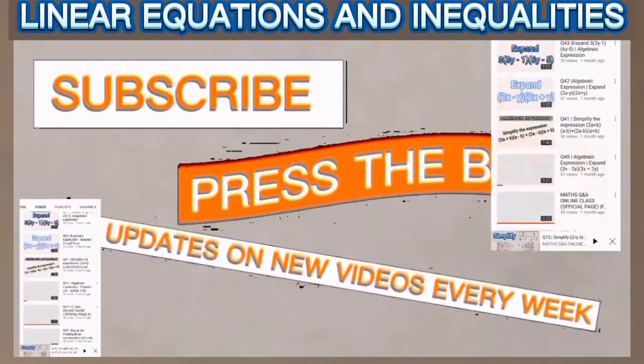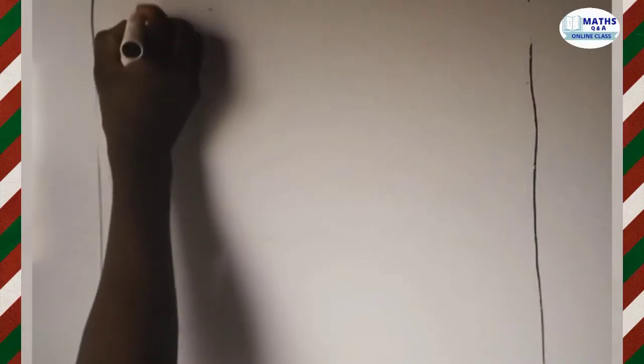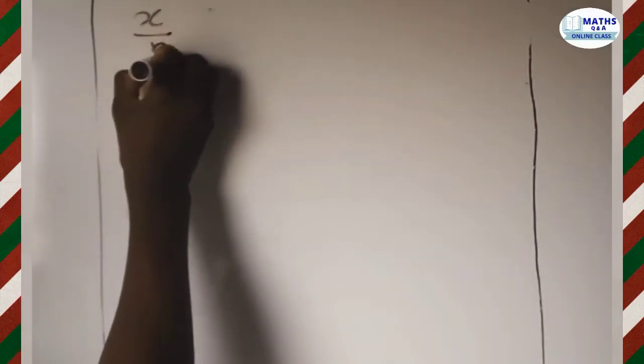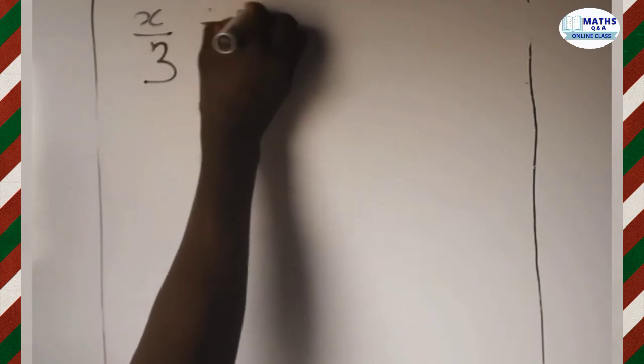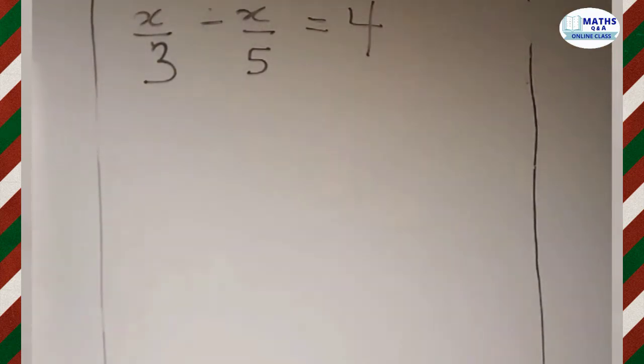Now let's get back to our question. We have been given x divided by 3 minus x divided by 5 which is equal to 4, and we have to find the truth set of this given equation.